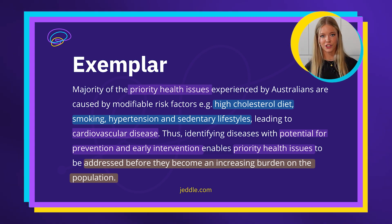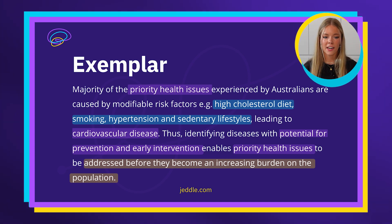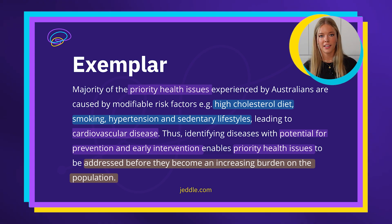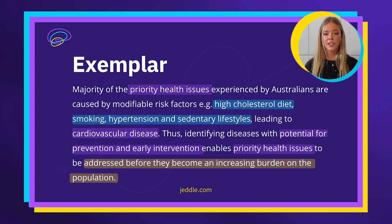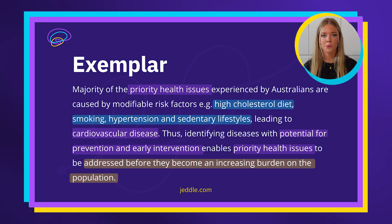Because this is a how question, it's important to provide some analysis of the topics you're covering. As you can see here I've highlighted in yellow addressing things before they become an increasing burden on the population, which links back to my priority health issue — in this example cardiovascular disease. I've also provided quite a few examples such as high cholesterol diet and hypertension using the abbreviation EG, which is fine for these questions because it means you can get to your examples quickly without wasting time writing it out every time.